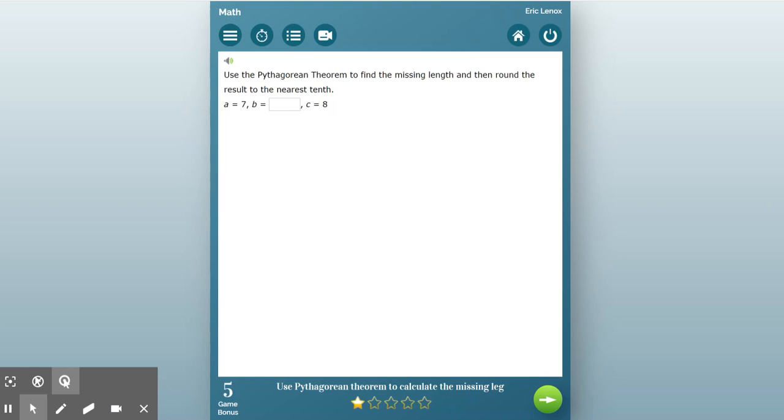Alright guys, so we are here. Here's what your mobile math work looks like and here's what you're supposed to be doing. It says use the Pythagorean theorem to find the missing length, then round to the nearest tenth. So the first thing you do when you're faced with this is you draw a triangle.